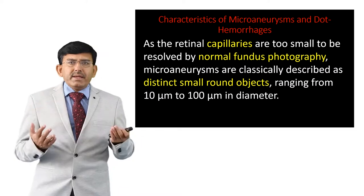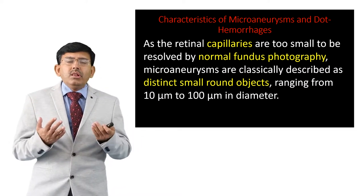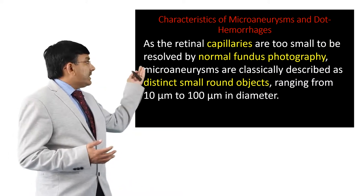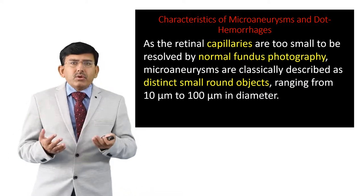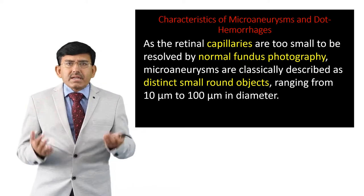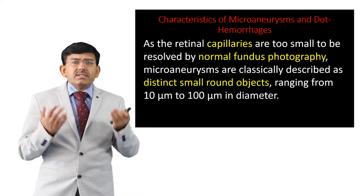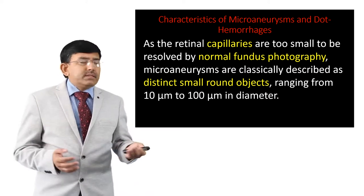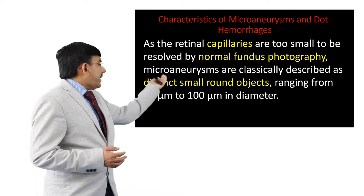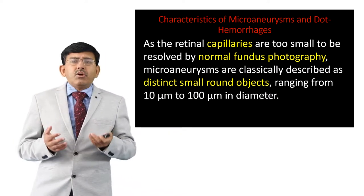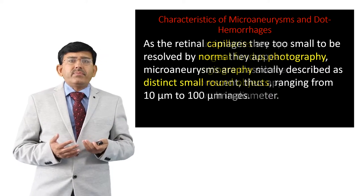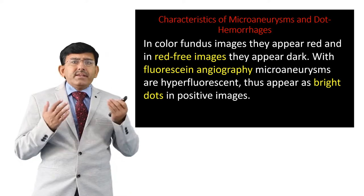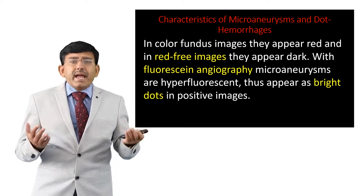As the retinal capillaries are too small to be resolved by normal fundus photography techniques, microaneurisms are classically described as distinct small round objects ranging from 10 micrometers to 100 micrometers in diameter. In color fundus images they appear red, and in red-free images they appear dark.